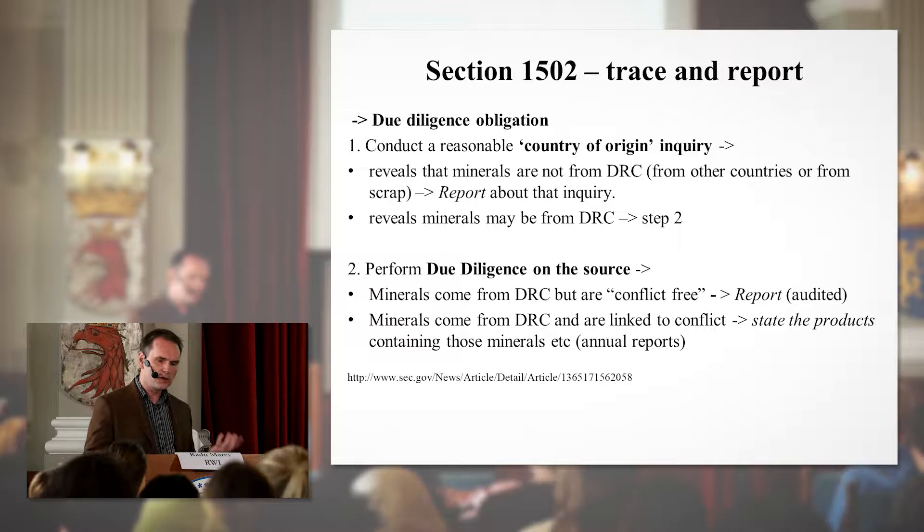The American law doesn't ban conflict minerals from entering the US or from being traded there; it obliges companies to disclose whether conflict minerals are present in their products. There are two types of obligations: first, a reporting obligation — issuing an annual report disclosing your due diligence process and how you traced the minerals; and second, identifying which specific products might contain conflict minerals. Companies can still sell those products in the US, but with disclosure, consumers may choose not to buy them.